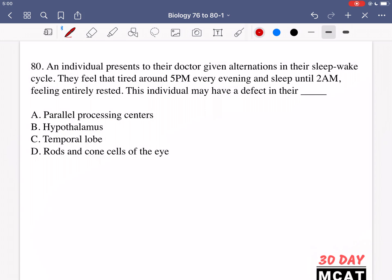They feel that they're tired around 5 p.m. every evening and they sleep until 2 a.m., feeling entirely rested. This individual may have a defect in their leg. So, if someone has a defect in something, which is related to their sleep-wake cycle.